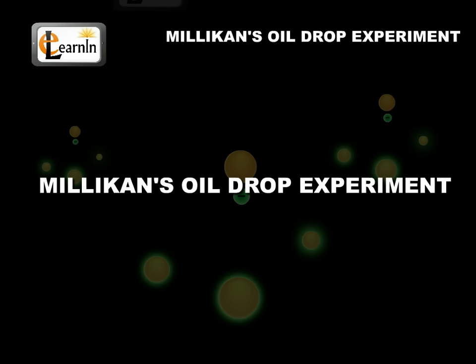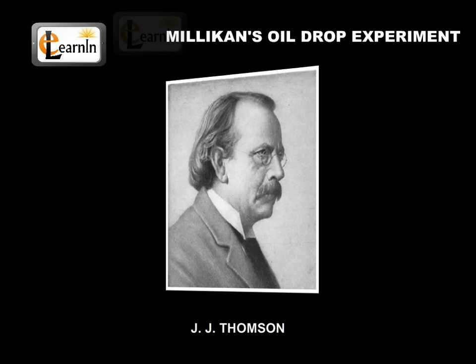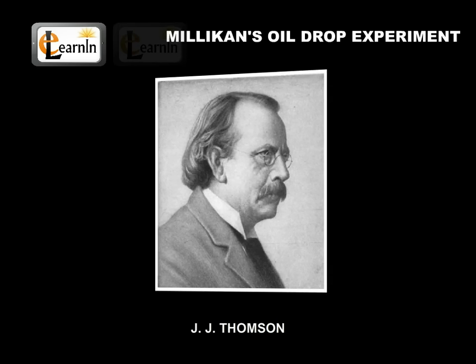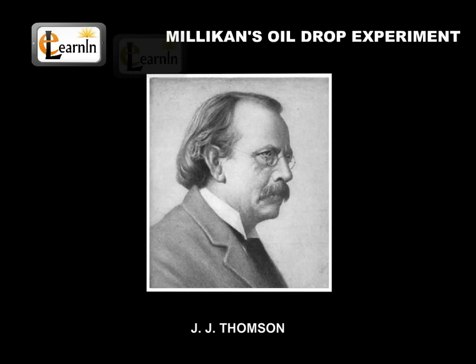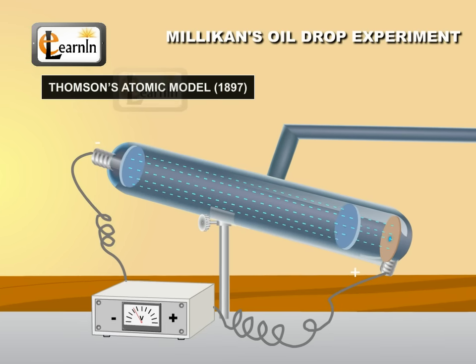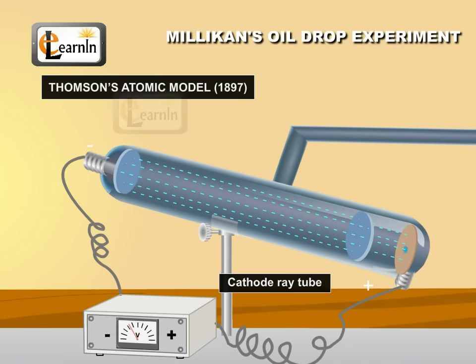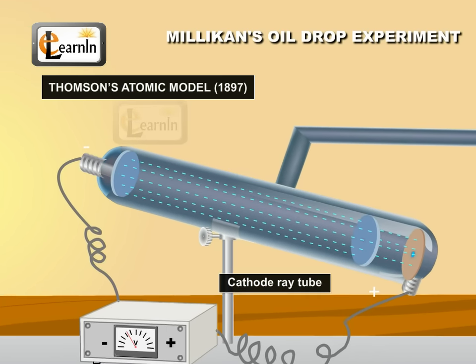Millikan's Oil Drop Experiment. British physicist J.J. Thomson had measured the ratio of electrical charge to the mass of an electron using a cathode ray tube in 1897.